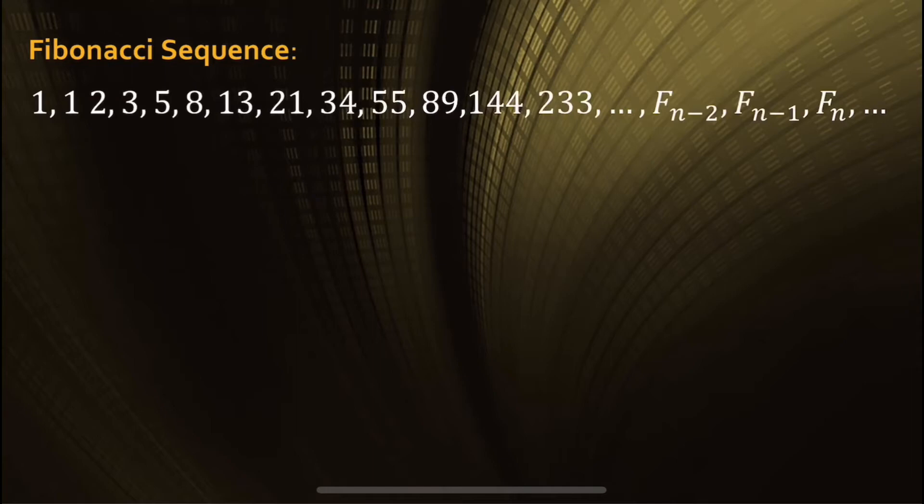If we talk about it in arbitrary terms, the number in the sequence, we'll call it f sub n, is the sum of the two preceding numbers, f sub n minus 2, and f sub n minus 1.